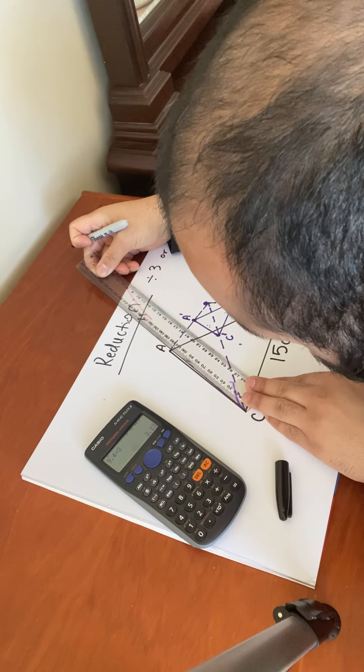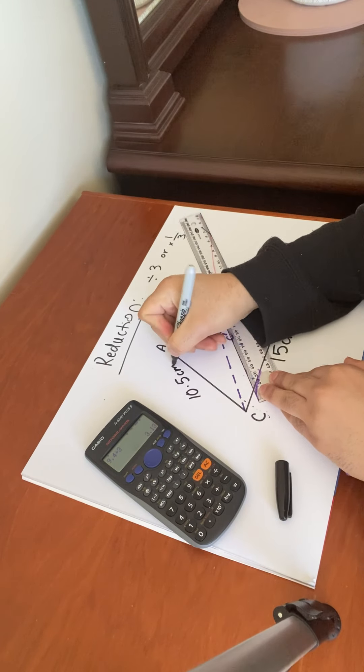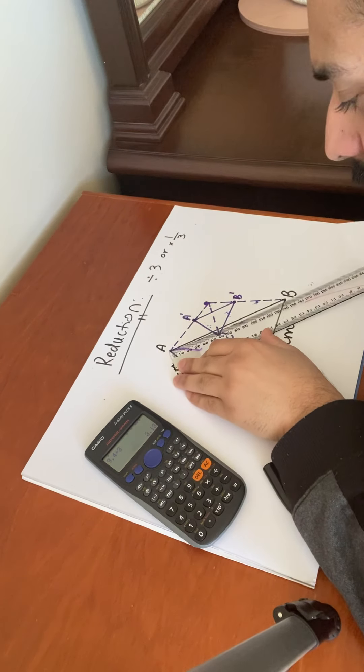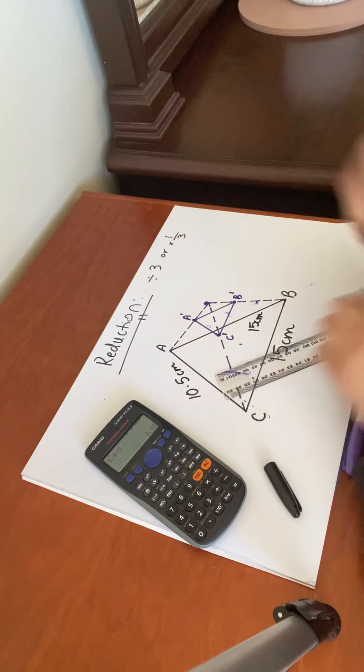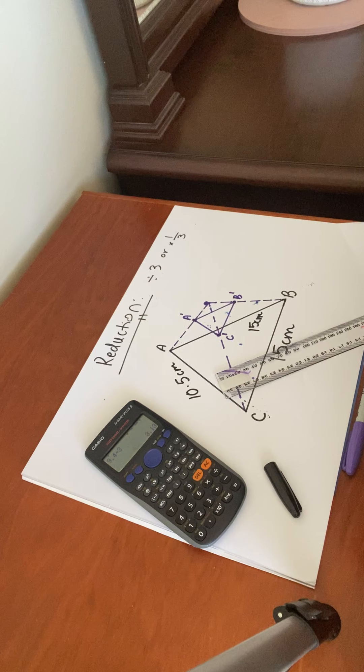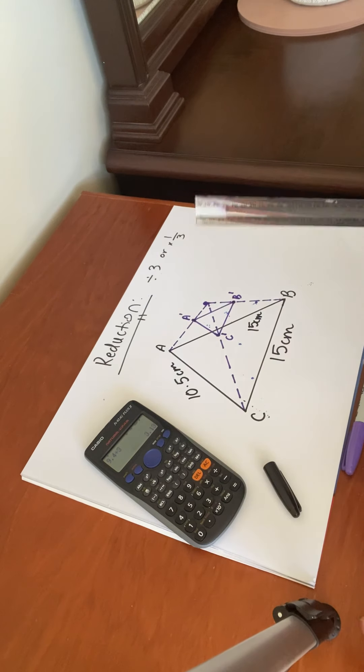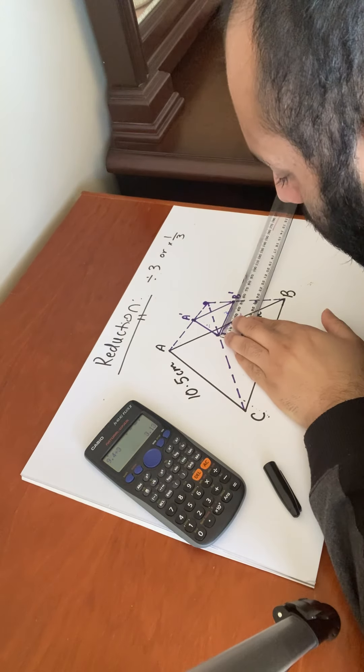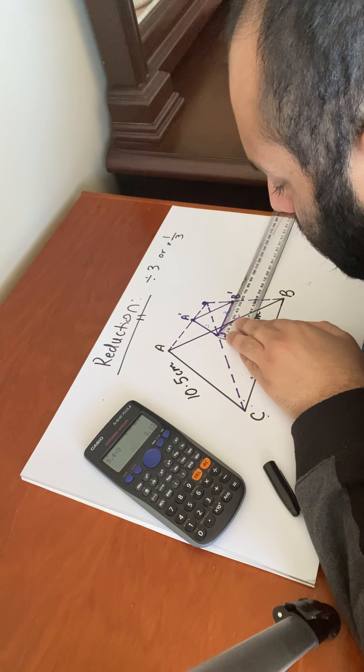So this is 15 centimeters, about 10.5 centimeters. This length here is 15 centimeters as well. So what that means is this: reduction by a third, or reduced by three, the original sides have to be divided by three. 15 divided by three we know is five. So let's just see if we got five. 15 divided by three is five. Actually sorry, let's see if we got that.